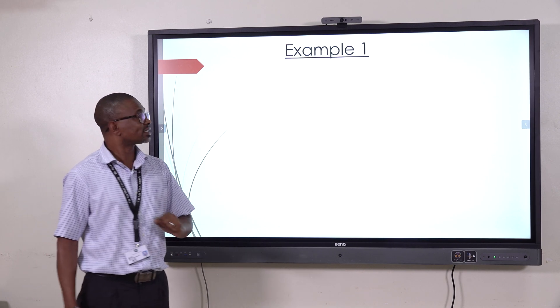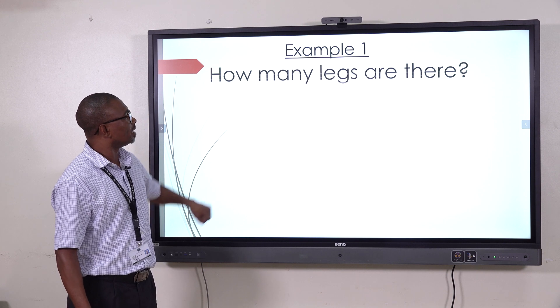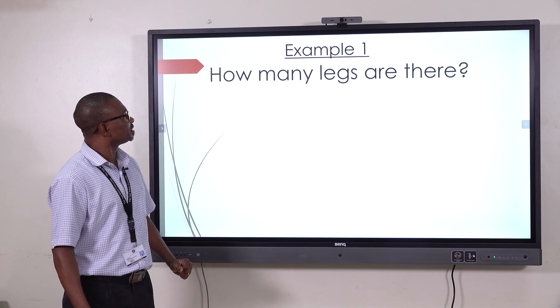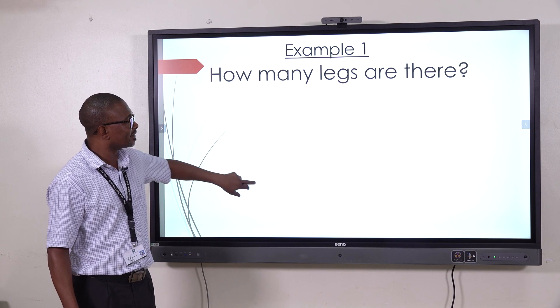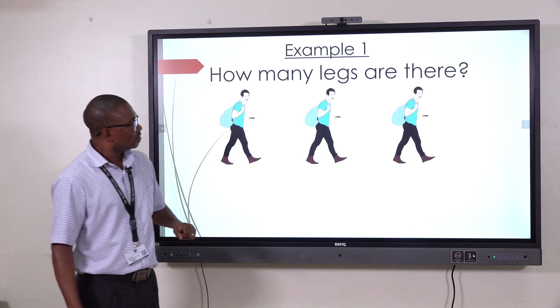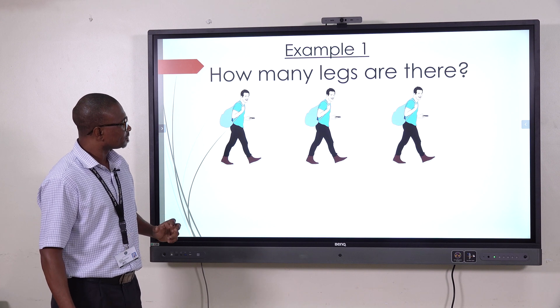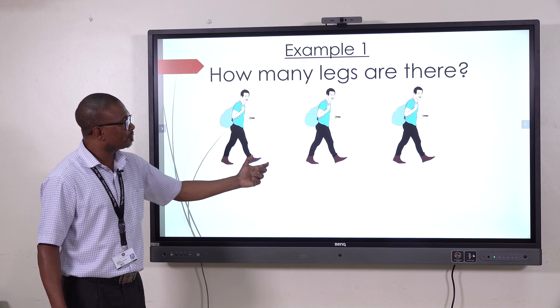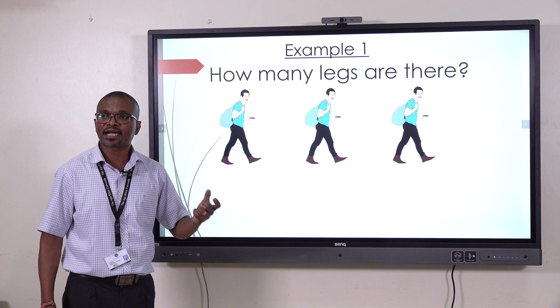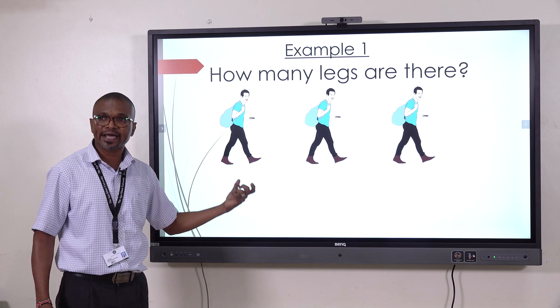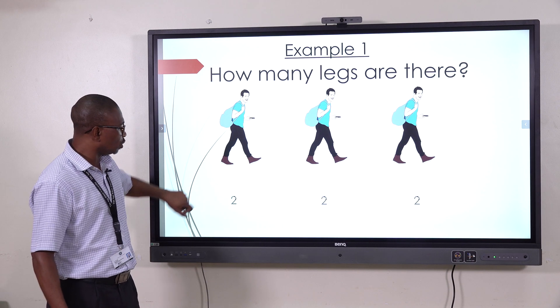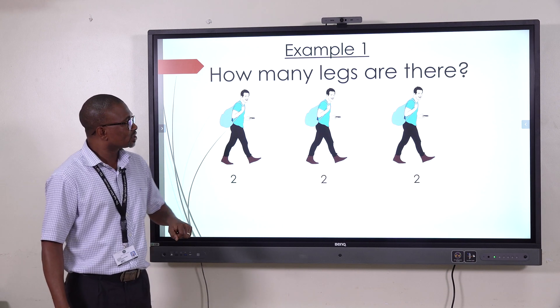Now, let us take the first example and work out our multiplication. The question goes, how many legs are there? How many legs are there? We've got some animation of people here. These three people, we consider them as our groups. And the legs which you are looking for will be our items in those groups.